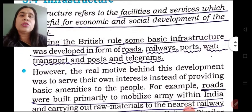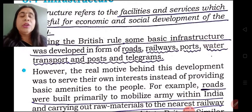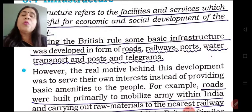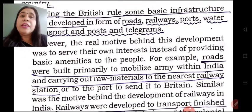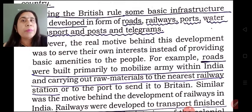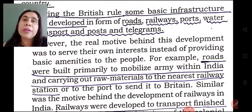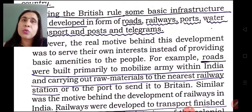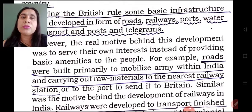Now, what was the condition of infrastructure at the time of independence? During British rule, some basic infrastructures were developed such as roadways, railways, transportation, and post and telegraph facilities. But their basic purpose of developing this infrastructure was not to support the Indians — rather, their basic aim was to carry out their trade in a more effective manner and to carry out their administration in the nation more effectively.